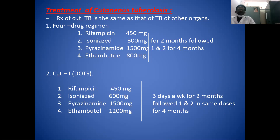In the DOTS regimen, the doses are: rifampicin 450 mg, isoniazid 600 mg (instead of 300 mg), pyrazinamide 1500 mg, and ethambutol 1200 mg. These four drugs are given three days per week for two months, followed by rifampicin and isoniazid for four months.